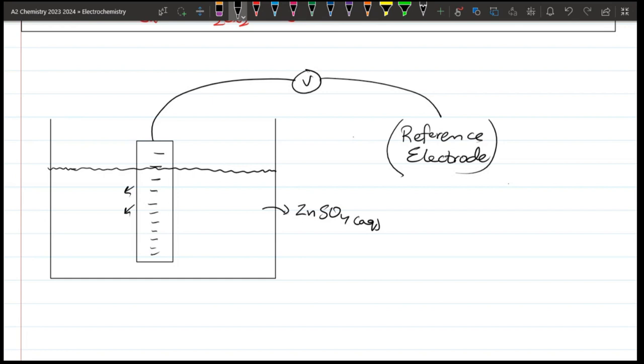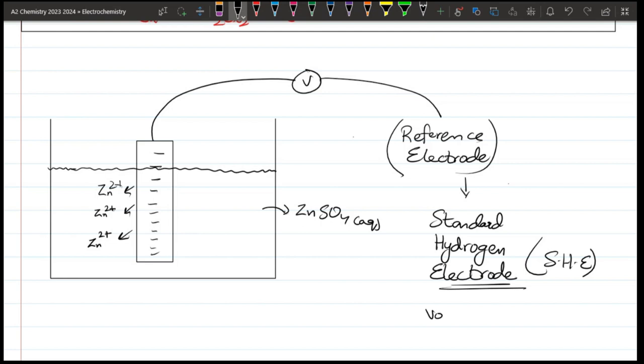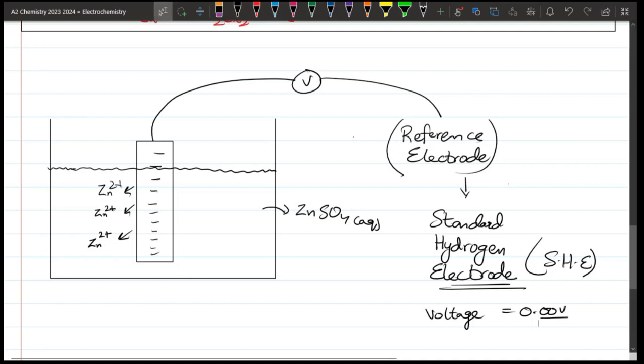This is Zn2 positive. We will have Zn2 positive ions. Now we are using the reference electrode. What is this? We call it Standard Hydrogen Electrode, SHE. The voltage is 0.00V.